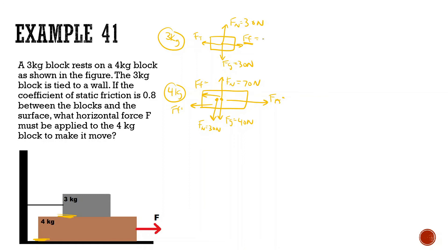The force of friction between the blocks is: normal force of 30 times coefficient 0.8, which gives us 24 newtons. The tension force holds the top block back with 24 newtons, and the equal and opposite friction on the four kilogram block is also 24 newtons. The friction at the bottom surface is: normal force of 70 times 0.8, which gives us 56 newtons.